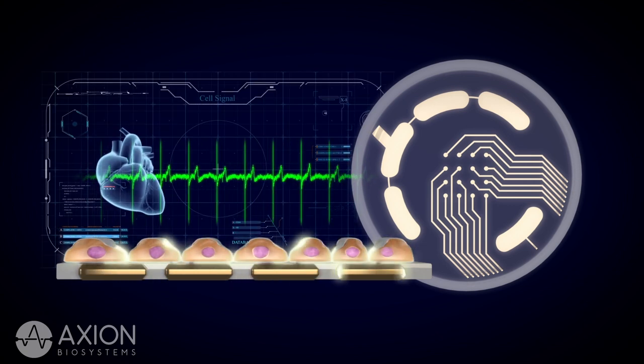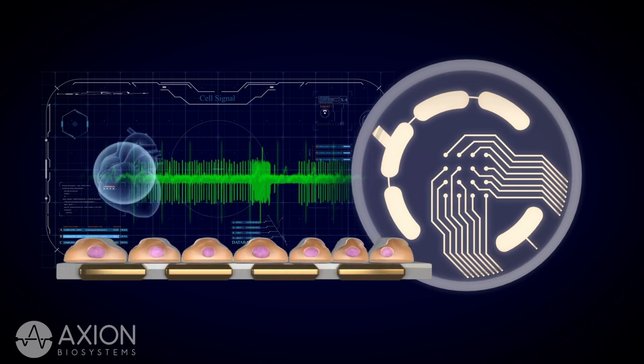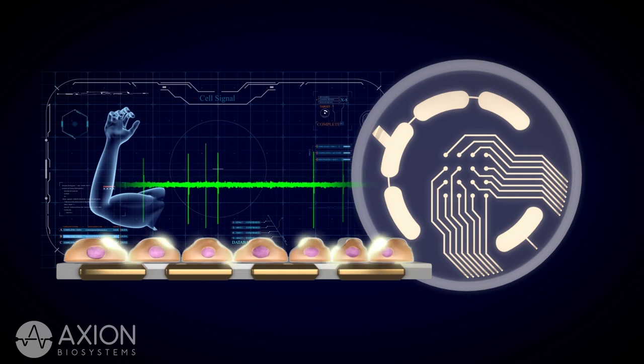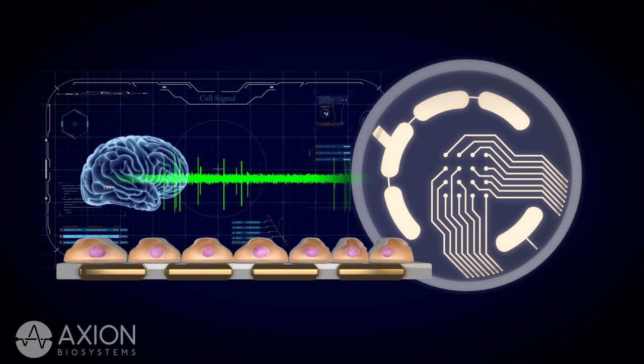While there are many types of electrically active cells in the human body, including heart cells, retina, muscle, and more, this video will focus specifically on neurons.